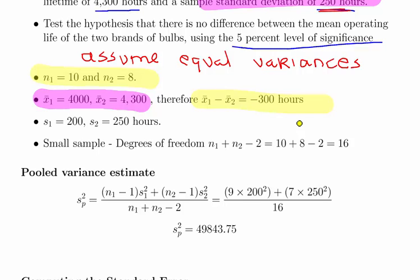You could actually equally put it in the other way around and end up with a difference there and observed difference in means of 300 hours. So the variances are there, 200 and 250.